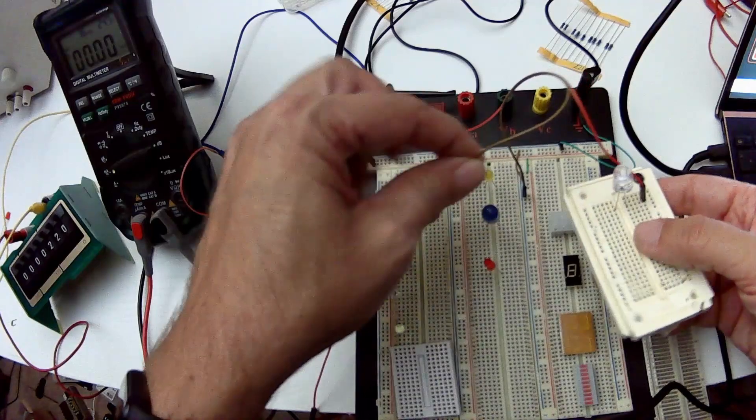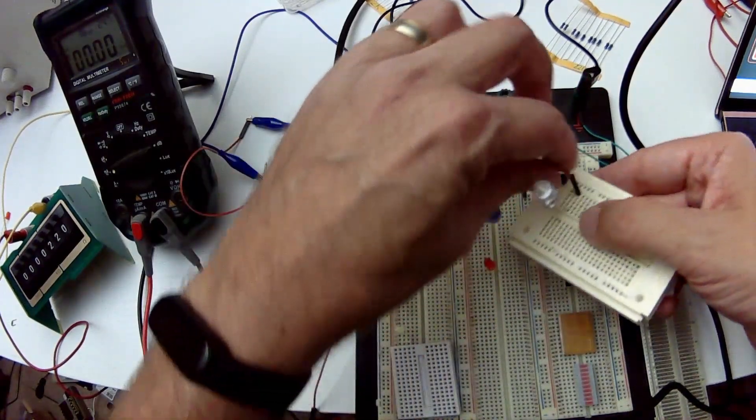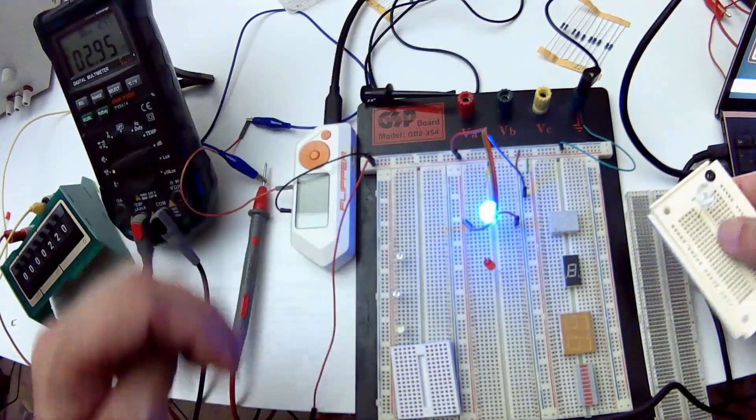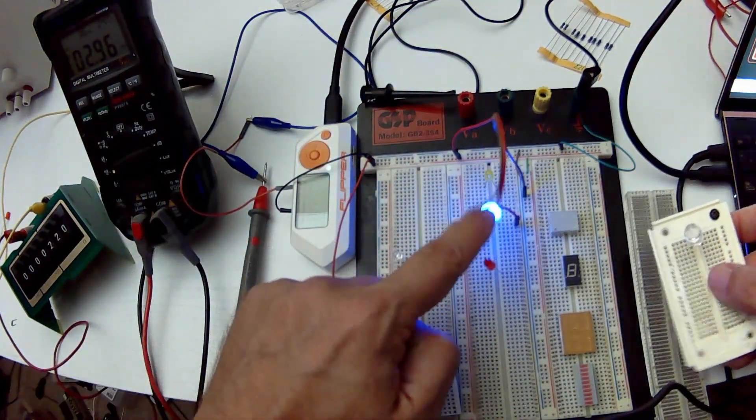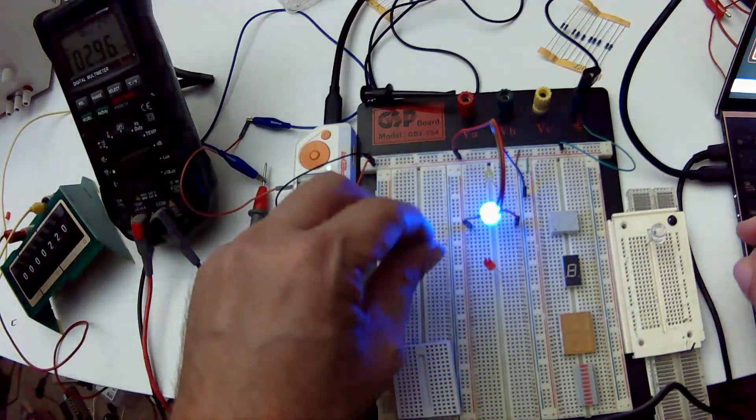So we see we're at 2.84 milliamps. So let's go ahead and switch the wires over to this blue LED and see what that ends up using. So that uses 2.95, 2.96 milliamps at the same 220 ohms.